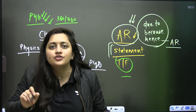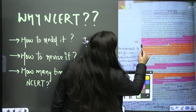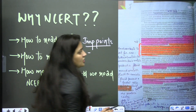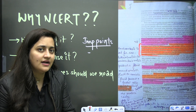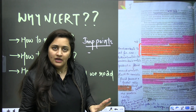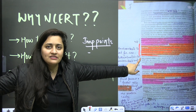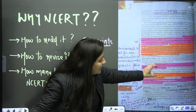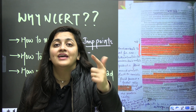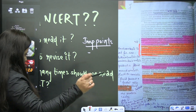For example, in my highlighted NCERT, I've used a particular color or pencil to highlight points asked in previous year papers. When I revise this NCERT, I don't have time to read each and every line — so I just focus on the important points. I know these are the lines where I made mistakes and from where questions came in previous year papers. If I revise that portion only, I can solve many questions on the basis of that. These are the proper ways to read and revise from NCERT, especially for biology.